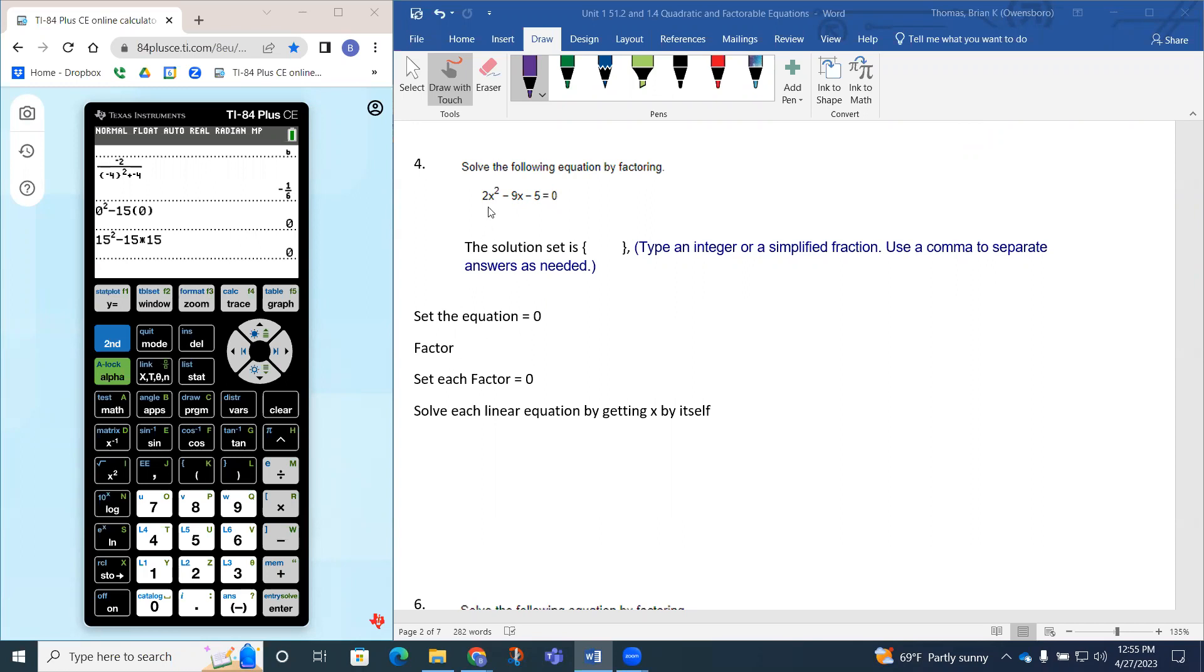We have 2x squared minus 9x minus 5 equals zero. Since the coefficient of x squared is 2, I'm going to use the box method as my strategy of factoring. You can also just use guess and check if you're good at it.